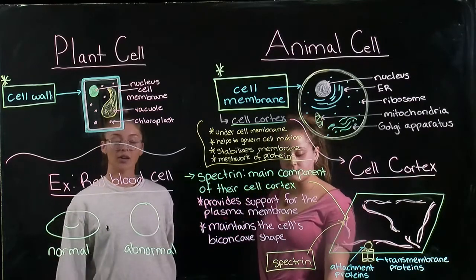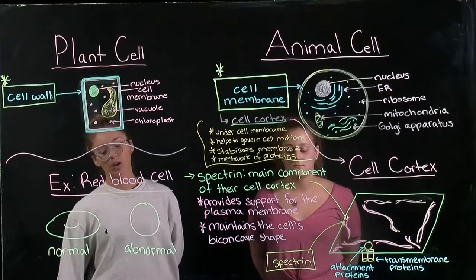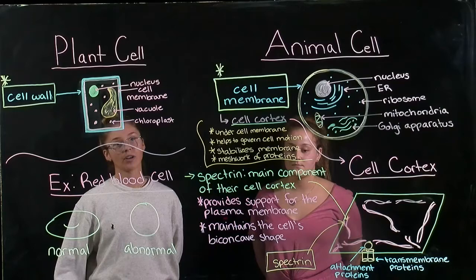But the cortex in these cells is especially rich in actin and myosin, which is a motor protein. They are much more complex than that of red blood cells.